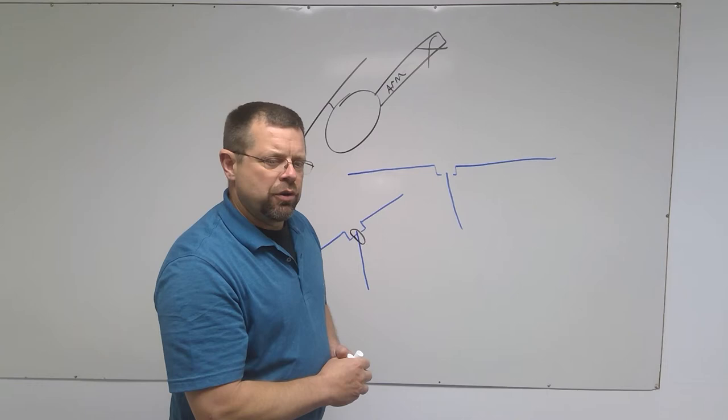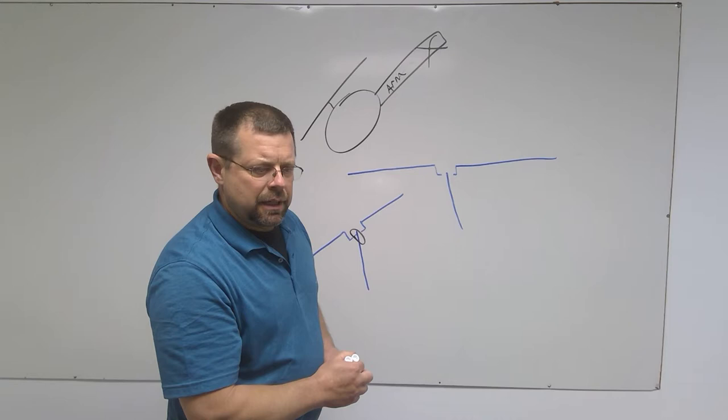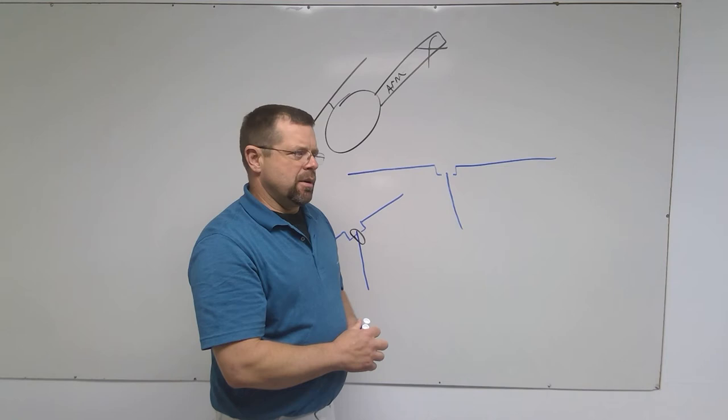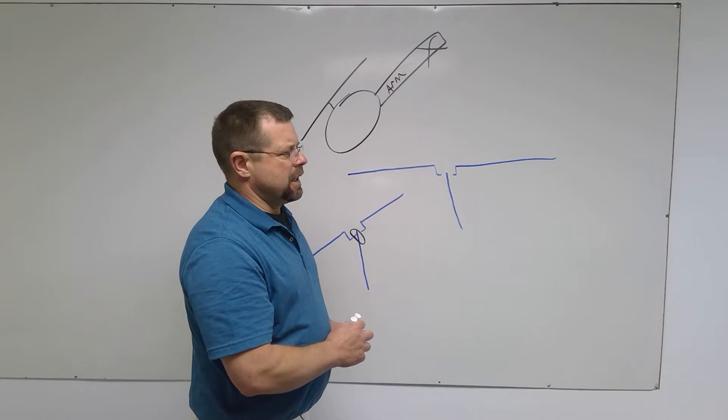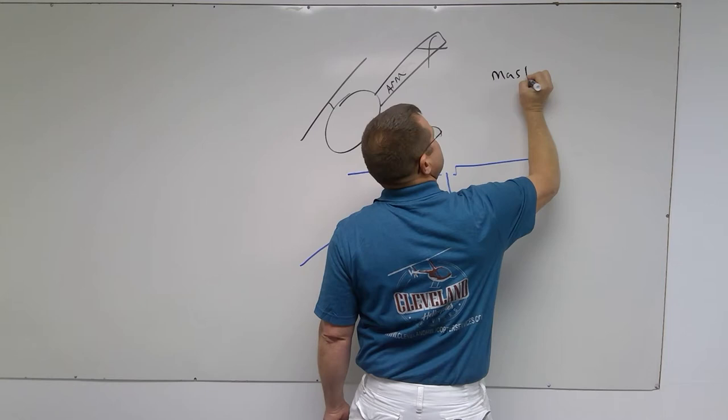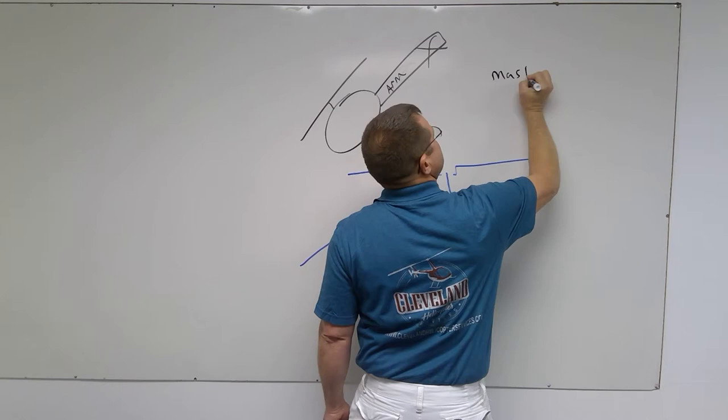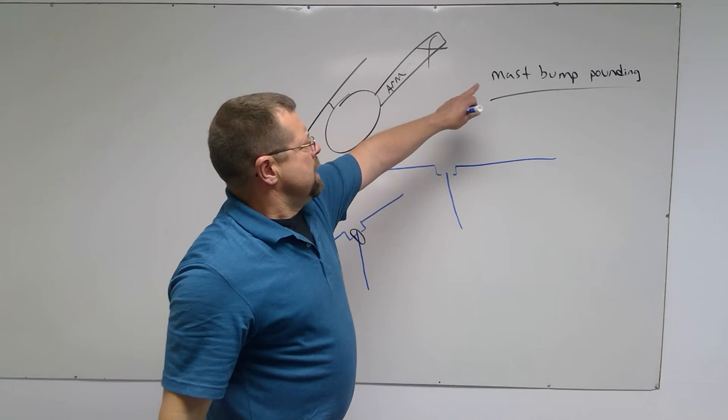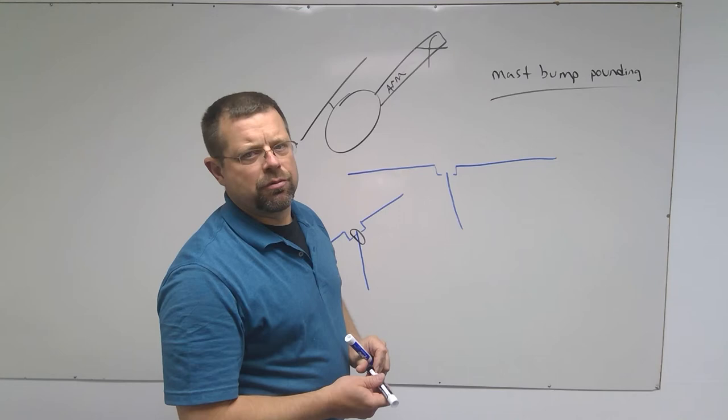Now if you have a fully articulated rotor system, it is still dangerous to conduct low G maneuvers or to get the helicopter into low G and to give inputs before you load it as well, because a fully articulated system such as the Enstrom can suffer from mast bump pounding, although not resulting in an accident but causing damage to your rotor system.